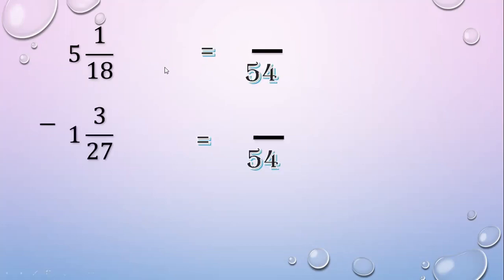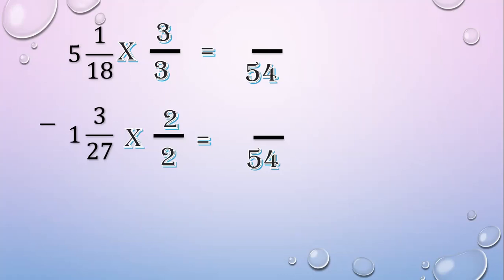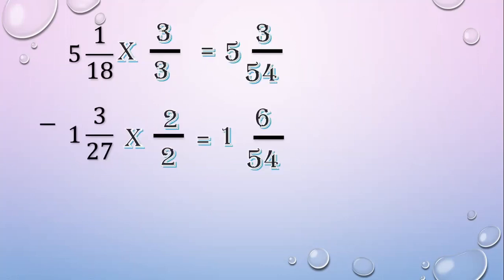Change the denominator to 54. For 18 to make it 54, we multiply 3 — so multiply 3 over 3. For 27 to make it 54, we multiply 2 — so multiply 2 over 2. 1 times 3 equals 3; 3 times 2 equals 6. Copy the whole numbers. Now when we subtract: 5 minus 1 equals 4, but 3 minus 6 cannot be done. So we are going to rename — we borrow from the whole number.